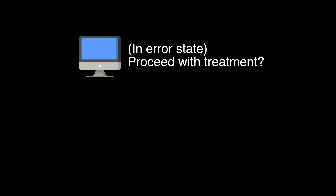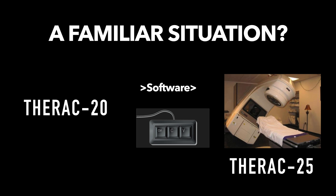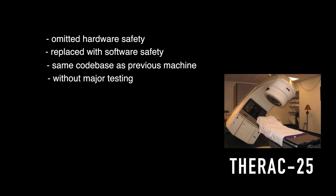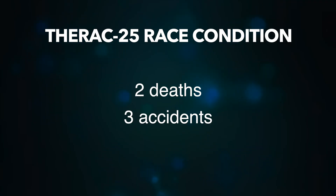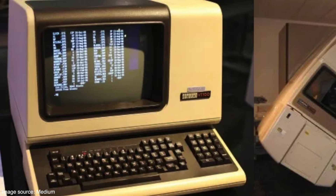The user interface compounded the issue by displaying incorrect or misleading information about the treatment mode, meaning operators could unknowingly confirm treatments delivering dangerously high radiation doses. The previous Therac-20 machine contained the same race condition, but hardware safety mechanisms prevented harm. That protective mechanism was omitted in the Therac-25 in favor of software controls, and the Therac-20 codebase was carried over without major testing because the company considered it already battle-tested. This race condition led to two people tragically losing their lives.